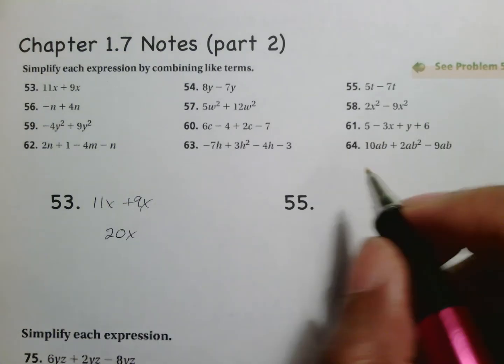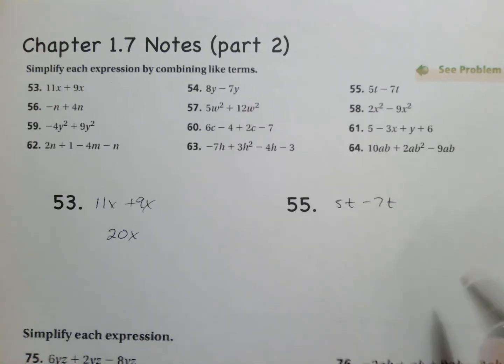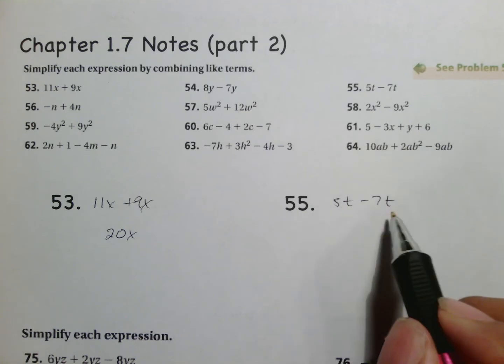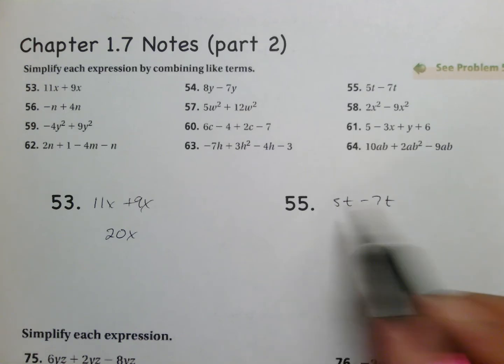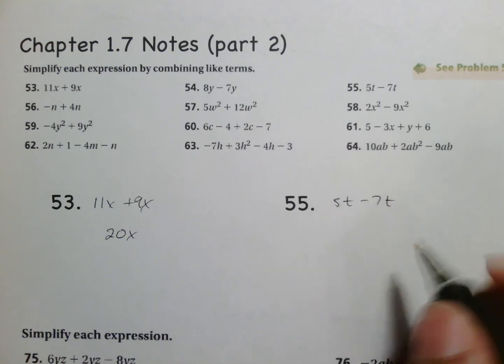Looking at number 55 you have 5t minus 7t. The only challenge on this is the fact that you have to pay attention to your signs. These are both like terms because they are both labeled as a t. The thing here is 5 minus 7 isn't enough. So remember the signs are different so we subtract.